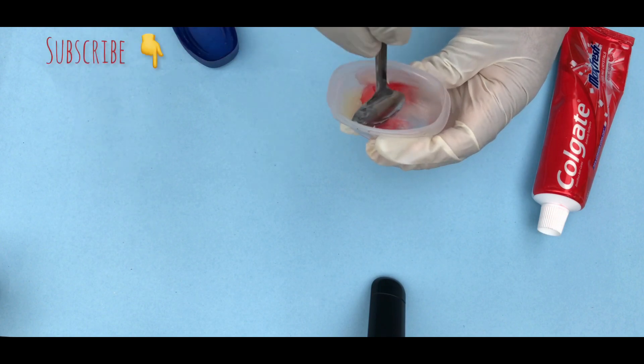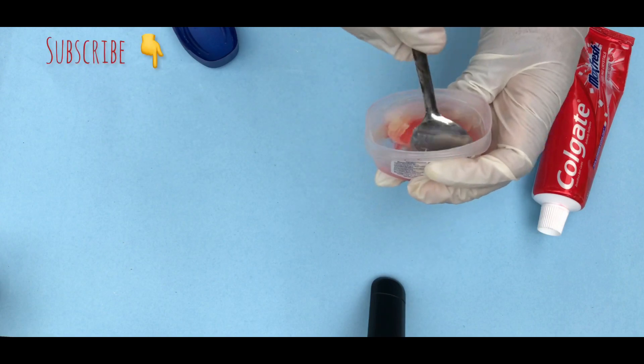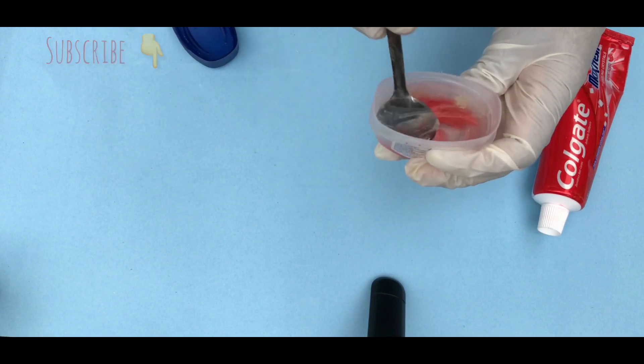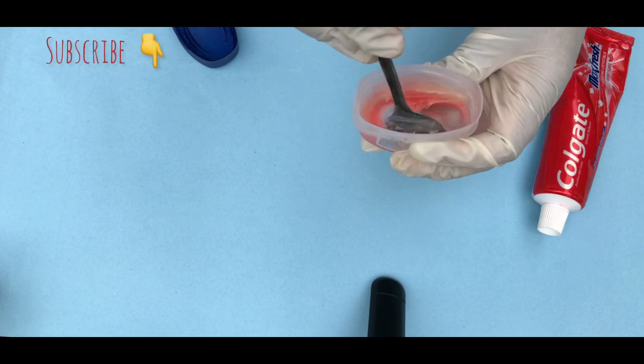to mix very well the two ingredients, Colgate toothpaste and Vaseline, together. Then after mixing this very well, you're going to apply this on your face and leave it for 25 minutes. Then the next thing you need to do